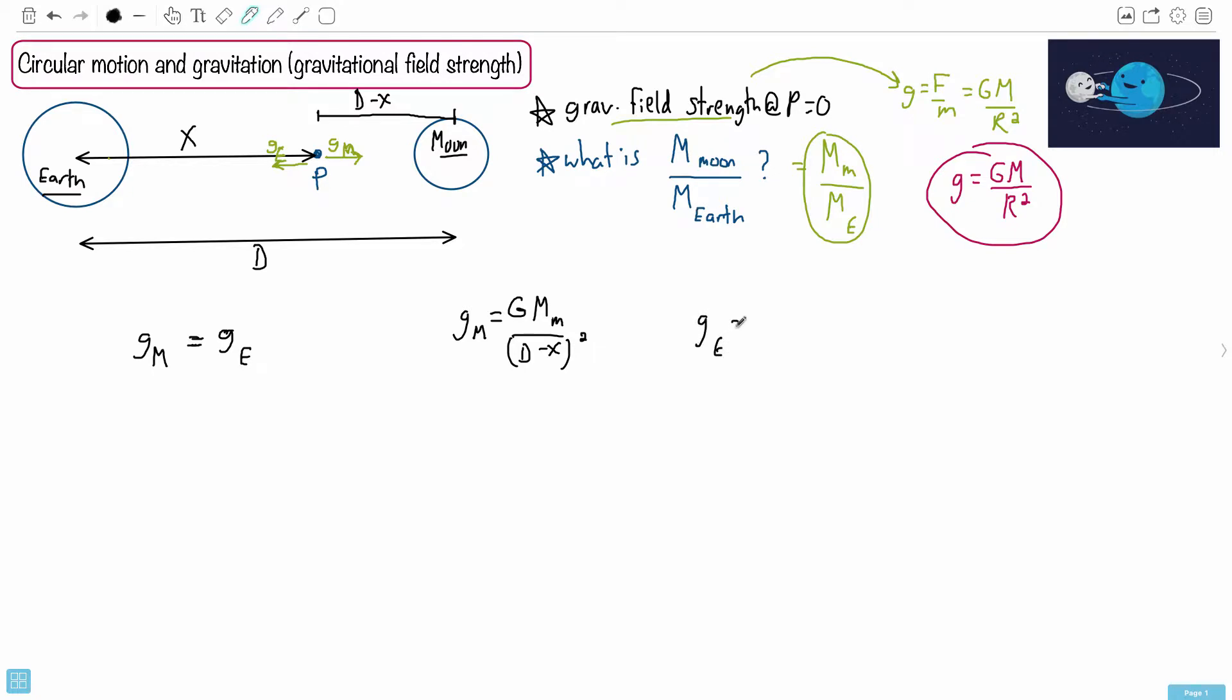Now, G of Earth is going to be capital G times the mass of the Earth, divided by the distance from P to the Earth, which in this case is just called X. So that's great. We have X squared. Now, because the two are equal, we can say then that G M M over D minus X, all that squared, equals G M Earth over X squared.